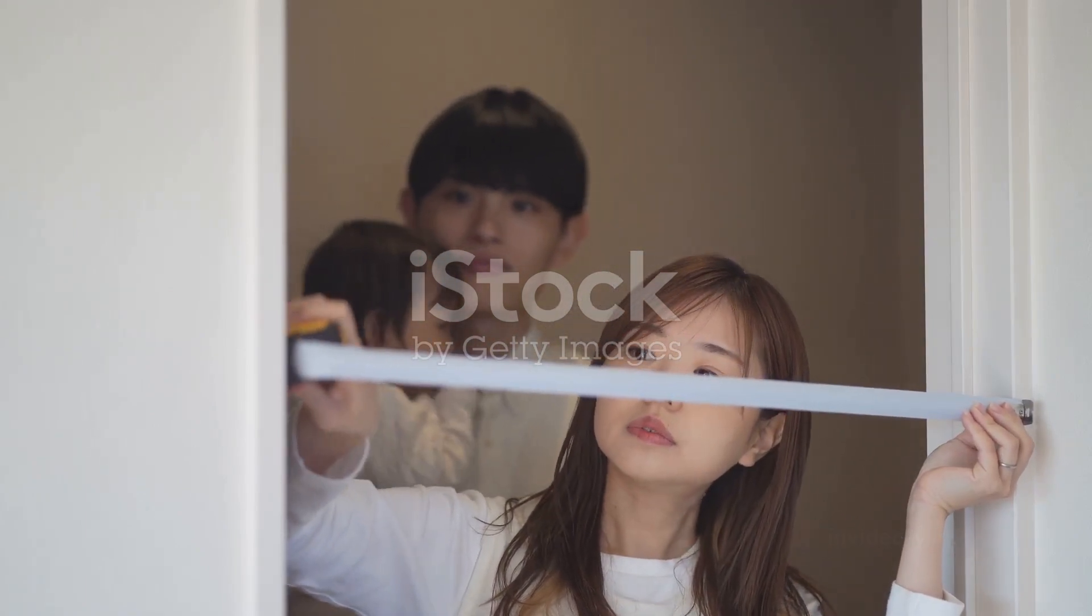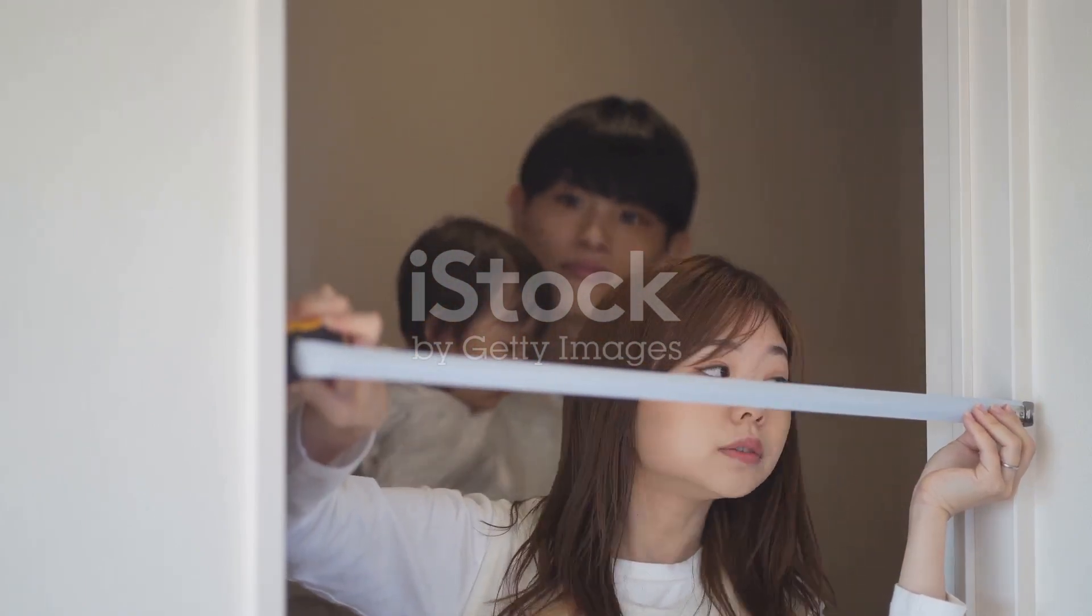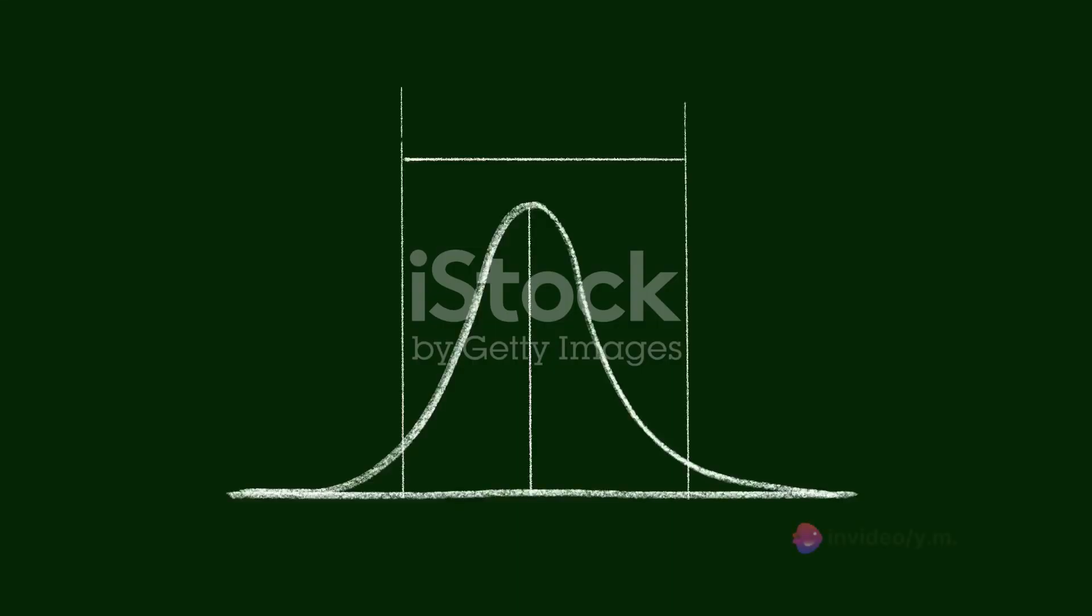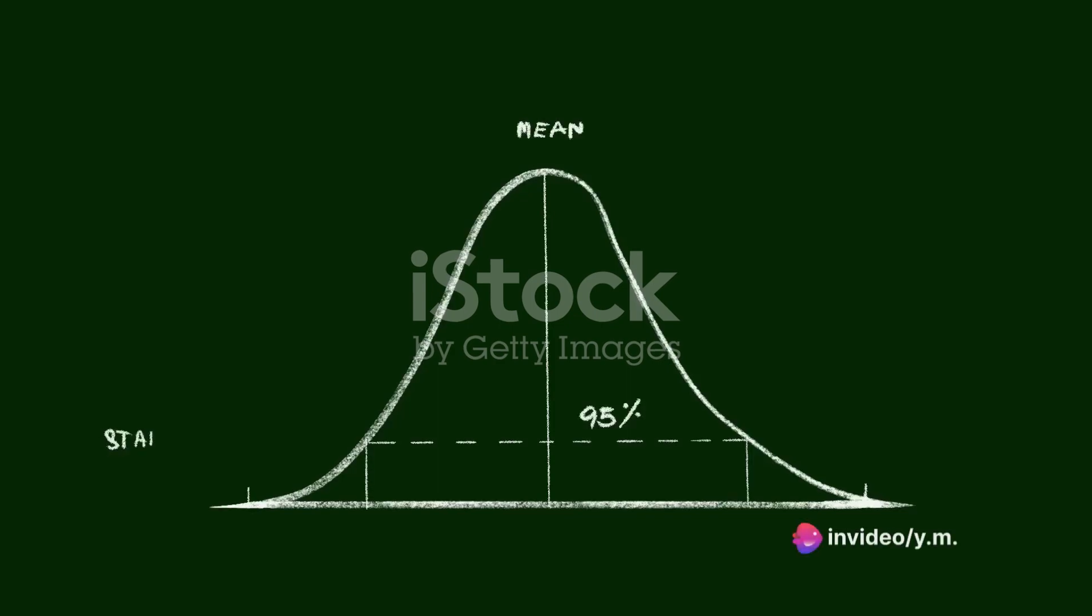The more tall height alleles a person inherits from their parents, the taller they are likely to be. This additive nature is why height tends to follow a normal distribution in populations. Most people cluster around the average height, with fewer people at the extremes. It's like rolling a dice. The most common outcome is somewhere in the middle, with less likelihood of getting the extreme results.